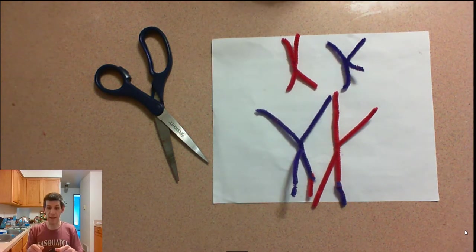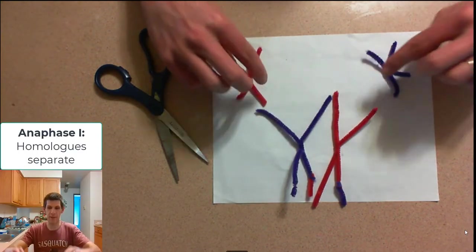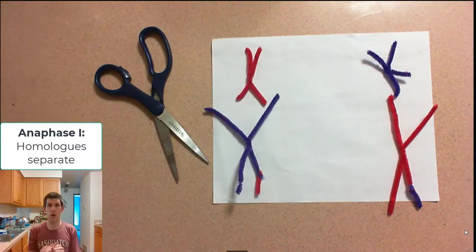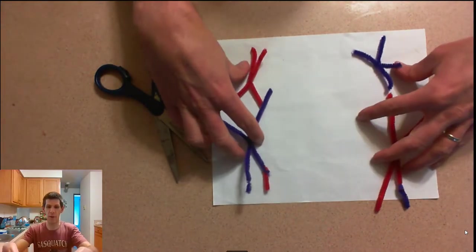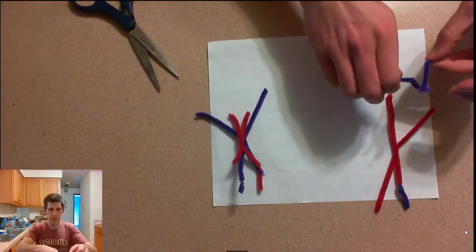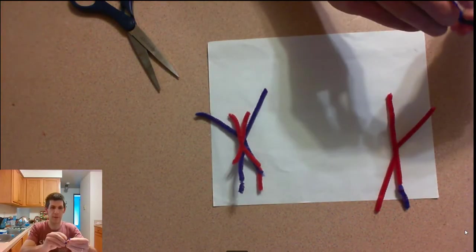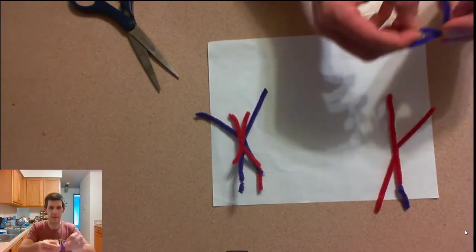So now, during anaphase, instead of separating the sister chromatids, they're going to separate the homologues. And it's going to be pulled apart, and at telophase, they'll be separated into their own temporary nuclei. I say temporary because we're about to begin the second phase of meiosis.